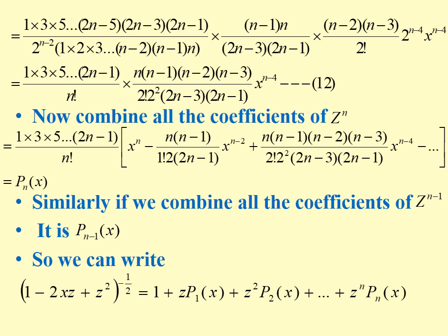Taking the coefficient of z power n, we end up with Pn of x. Similarly, if you take the coefficient of z power(n-1), we get Pn-1. So we can write (1 minus 2xz plus z squared) whole power minus half as 1 plus z P1(x) plus z squared P2(x) plus and so on, with the final term being z power n times Pn(x). Thank you.